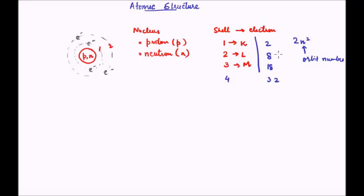Now you have an idea about the distribution of the different subatomic particles in an atom. What is the size of an atom? An atom normally ranges from the center to the outermost shell — it is around 10 to the power minus 10 meters. The exact size will depend on how many shells are there, but that is the order of size of an atom.